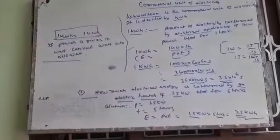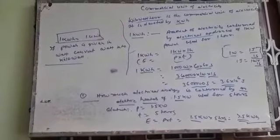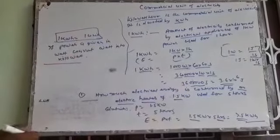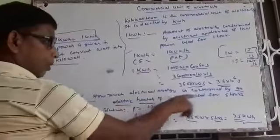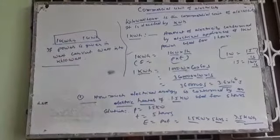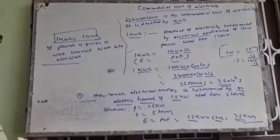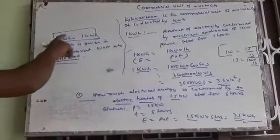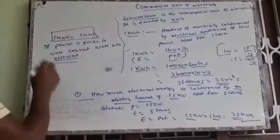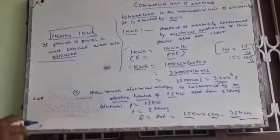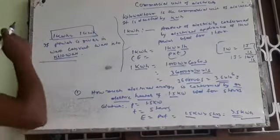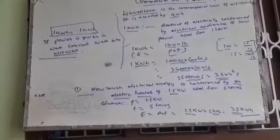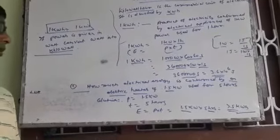In this way we can solve many numerical questions. If there are more than one appliance — suppose in the same question there are 2 heaters of 1.5 kilowatt — multiply it by 2: 2 into 1.5 into 5 hours. If power is given in watts, to get the answer in commercial units we must convert watts into kilowatts. Always remember: if power is given in watts, divide the value by 1000 to get the value in kilowatts, then multiply by number of hours to get the answer.